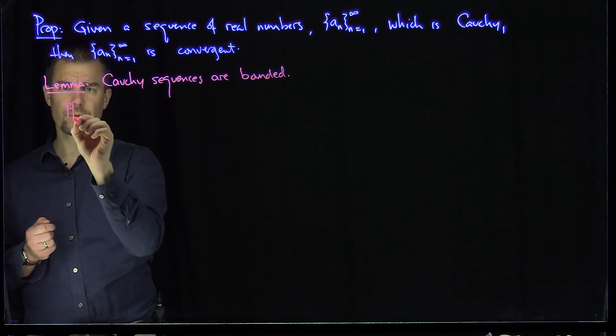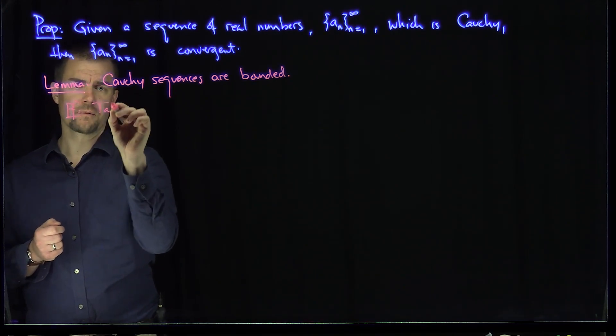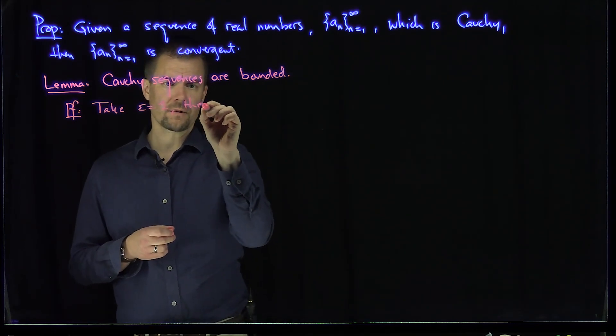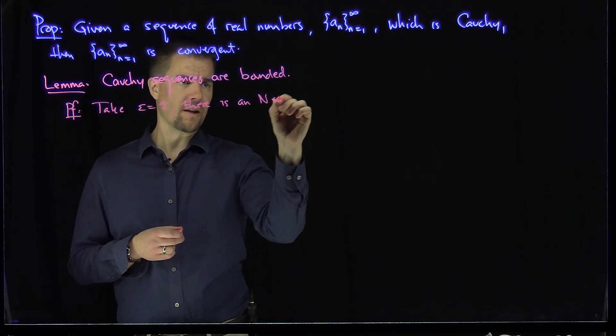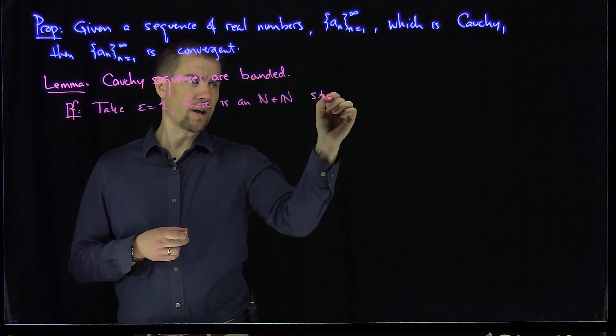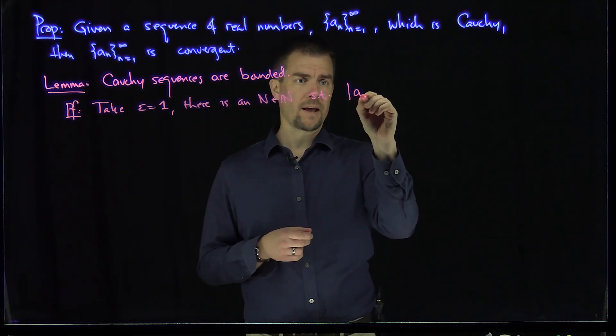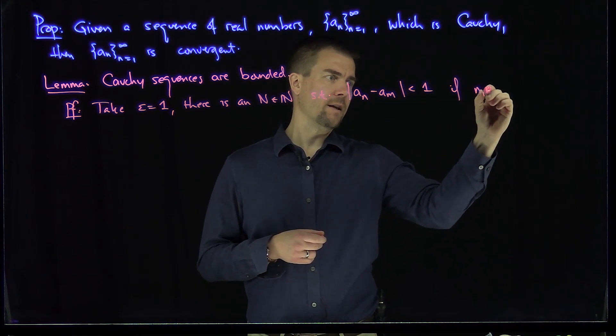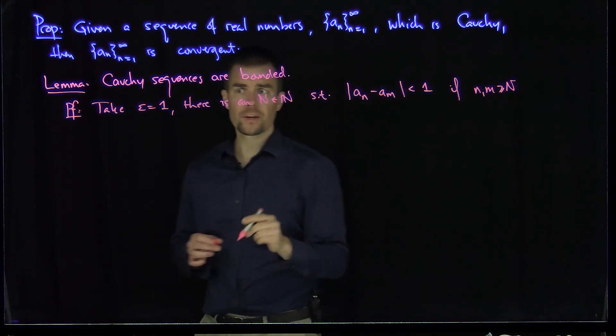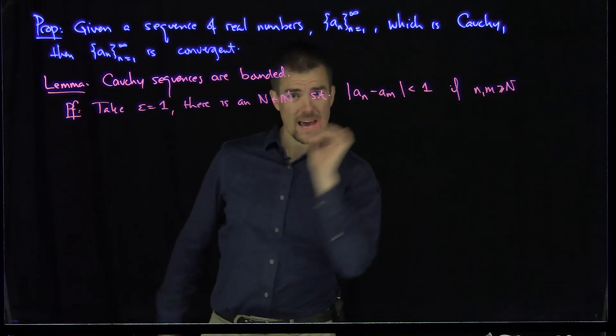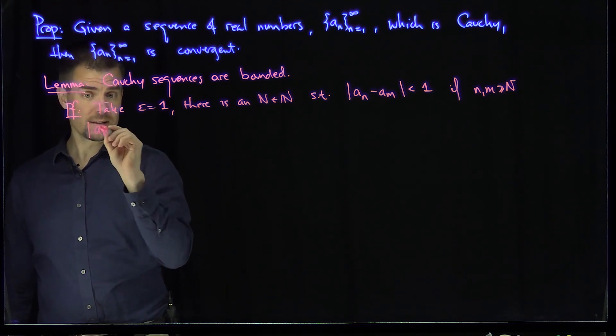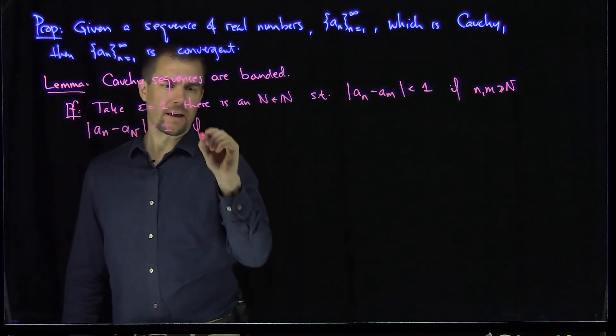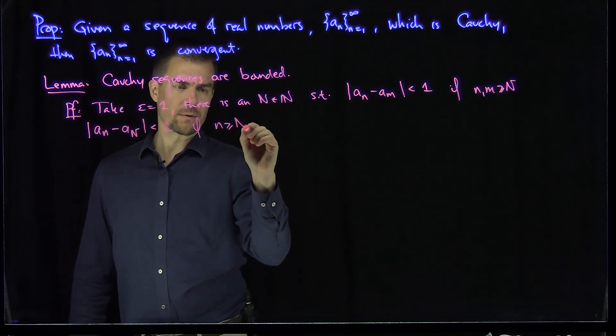Okay, and so to prove this lemma, take epsilon to be equal to 1. And then we know there is an N, an N such that the difference between a_n and a_m is less than 1 if n and m are bigger than or equal to N. So in particular, since n is fixed and capital N is fixed, this tells me that a little n minus a N capital is less than 1 if n is bigger than or equal to N.